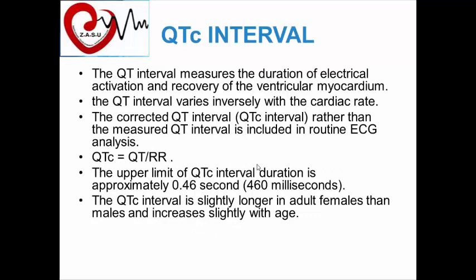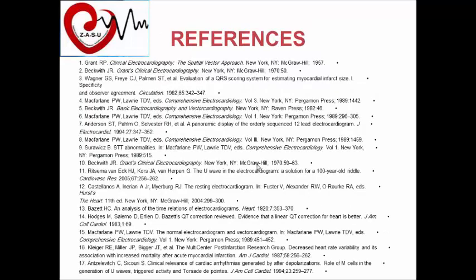The QT interval, or corrected QT interval (QTc), measures the duration of electrical activation and recovery of the ventricular myocardium. The QT interval varies inversely with cardiac rate, so the corrected QTc is used in routine ECG analysis, calculated by dividing the QT interval by the square root of the R-R distance. The upper limit of the QTc interval is approximately 0.46 seconds or 460 milliseconds. The QTc interval is slightly longer in adult females than adult males — this is the only ECG value that is longer in females.